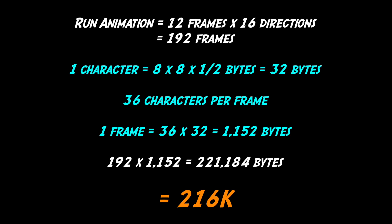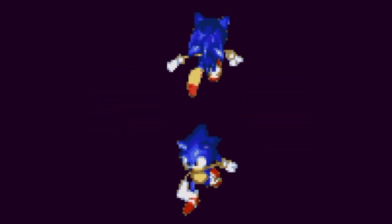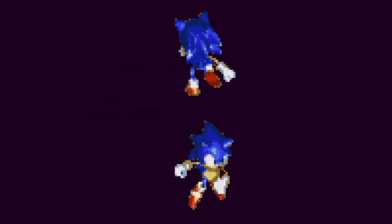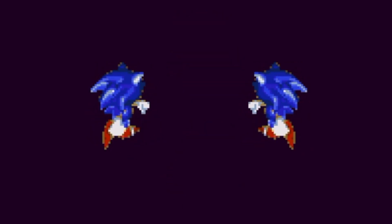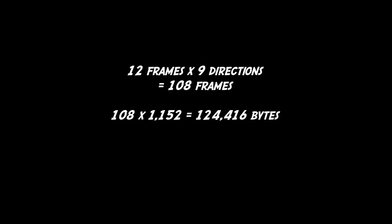Well, long-time viewers will have already figured out that we can mirror at least some of the directions. Apart from the straight down and straight up, all the other animations can be mirrored. So mirroring 7 of the animations means that we now only need 9 directions, which drops the memory used to 121k. A good start.